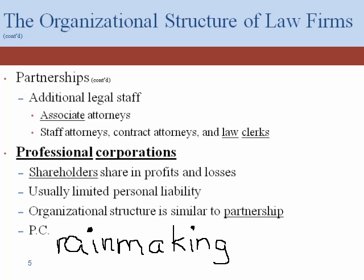I've been talking as if there are only two categories of attorneys — the owners, the partners, and the associate attorneys — and in some law firms that's pretty close. But there are sometimes three other categories: staff attorneys, contract attorneys, and law clerks. Staff attorneys are probably the most common third category. In many senses they are like associates, but the big difference is that they're not on partnership track — there is no expectation they will ever become a partner.